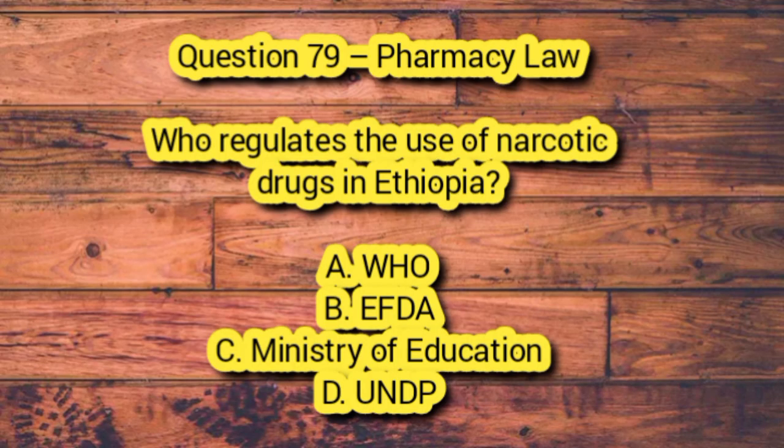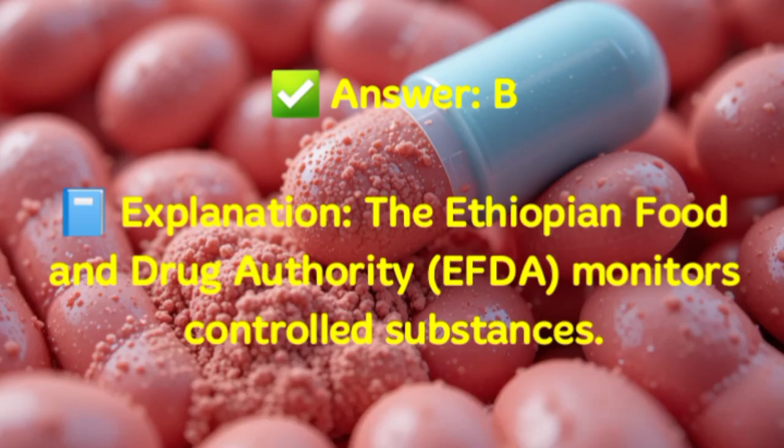Question 79 – Pharmacy Law. Who regulates the use of narcotic drugs in Ethiopia? A. WHO. B. EFDA. C. Ministry of Education. D. UNDP. Answer: B. Explanation: The Ethiopian Food and Drug Authority, EFDA, monitors controlled substances.